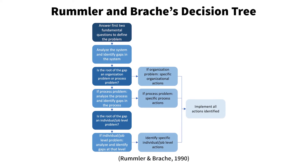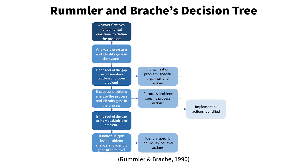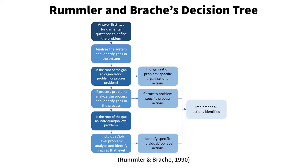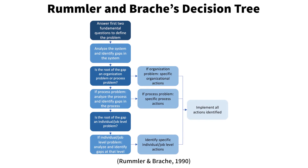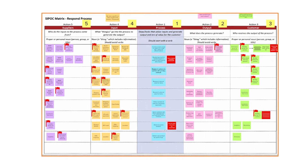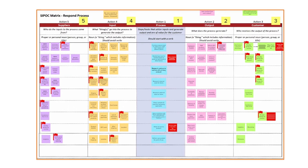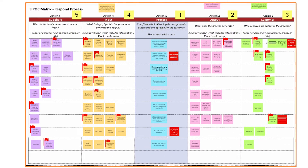We used basic consensus building tools like a project charter and an A3 to help us tease out the problem we wanted to solve, our scope, and the purpose of the system and the components within it. After that, we went through a process using a workshop developed by Rumbler and Brache. This decision tree has the team discern if the root of the gap is an organizational problem, process problem, or individual or job level problem. We looked at the system which included all the processes from identifying a shortage through to stocking a substitute product at the point of use.